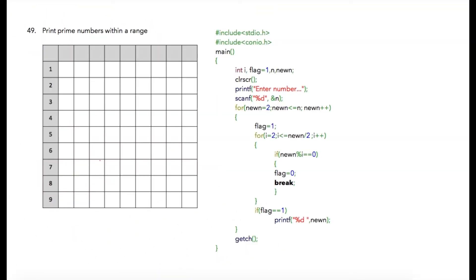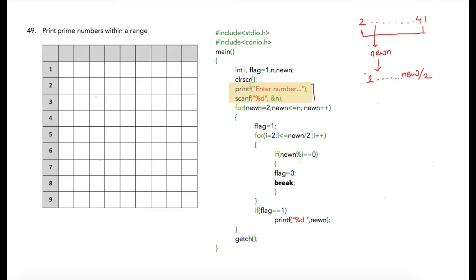This program is similar to the previous one. The only difference is that we are going to print all the prime numbers from a given range. We'll ask the user to enter any number — suppose the user enters 41 — then the program will print all the prime numbers from 2 till 41. Each number will be checked whether it is prime or not. We need to divide that number from 2 till that number divided by 2, which is the logic we saw in the previous program.